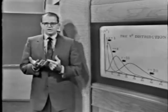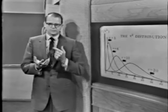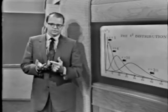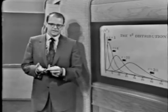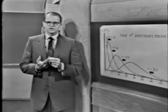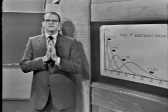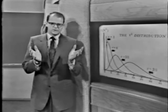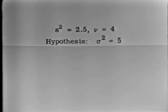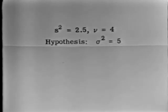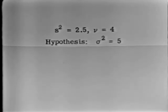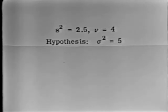Now that we've learned the equation associating the statistic s-squared with the parameter sigma-squared, and something about the chi-square distribution's mathematical form and tabulation, we're in a position to do a test of significance. Suppose we have a collection of five observations where s-squared equals two and a half, taken from a normal distribution whose variance sigma-squared equals five. We have s-squared equal to two and a half with four degrees of freedom, and the claim is that sigma-squared equals five.